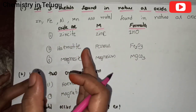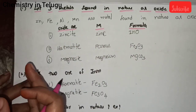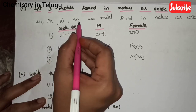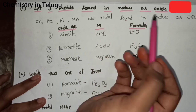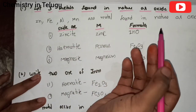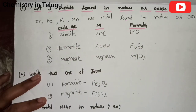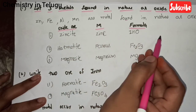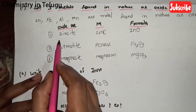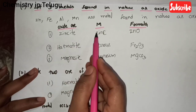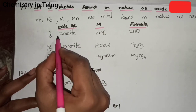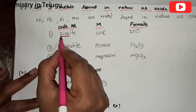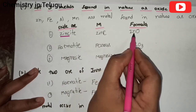Next, metals such as zinc, ferrous (iron), aluminum, and manganese are found in nature. They require oxygen to form oxide ores in nature.